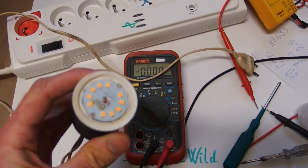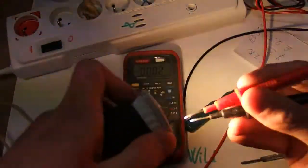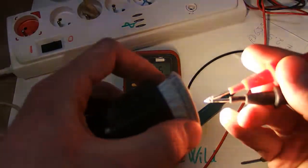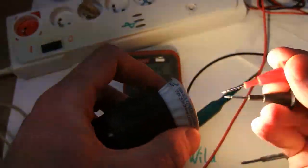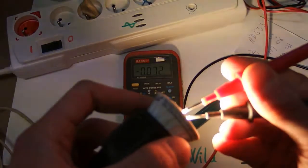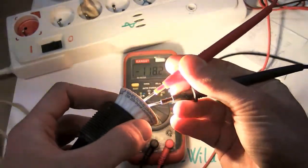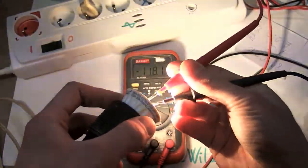Before the disassembly we can measure the voltage across the LEDs. This is getting a little bit dangerous. Can you see it? 118 volts.